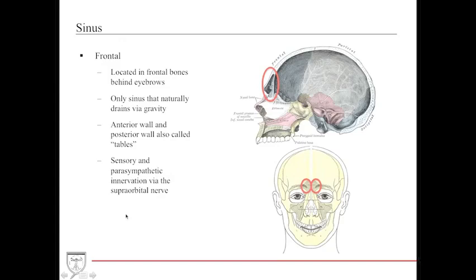The frontal sinus is the only sinus that drains by gravity. It is located behind the eyebrows and has two areas — the anterior table and the posterior table. A fracture of the frontal sinus is a very complicated problem, as reconstruction of a displaced anterior or posterior table fracture is very difficult and may require a multidisciplinary team including plastic surgery and neurosurgery. Sensory and parasympathetic innervation of the frontal sinus is provided by the supraorbital nerve.